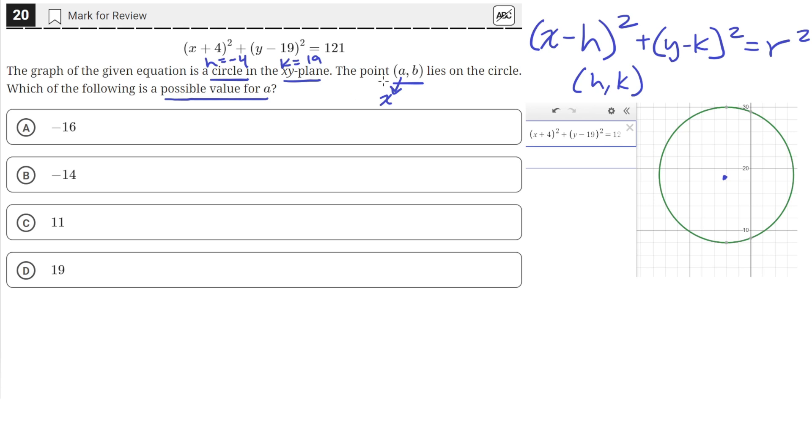The radius squared is 121, and the square root of 121 is 11. This means the radius, which is the length from the center to the outside edge, is 11.